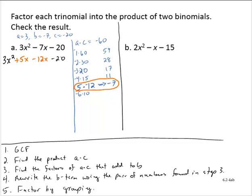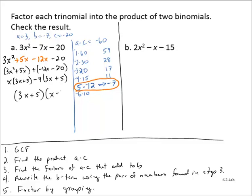Now I factor using grouping: 3x squared plus 5x plus negative 12x minus 20. The greatest common factor of the first grouping is x, so I have x times (3x plus 5). The greatest common factor of the second grouping is negative 4, so I factor out negative 4. Negative 4 times 3x is negative 12x, and negative 4 times positive 5 is negative 20. I have a common factor of 3x plus 5, so I can write this as (3x plus 5)(x minus 4).